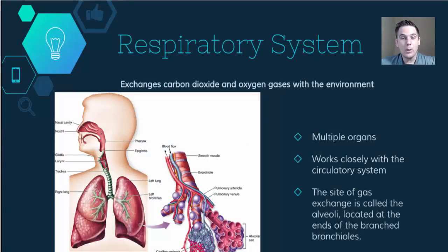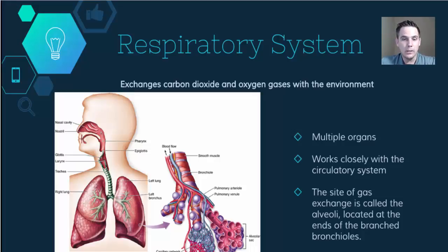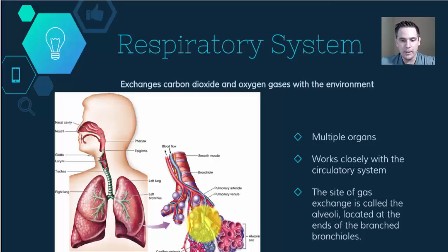For example, the respiratory system exchanges carbon dioxide and oxygen gases with the environment — carbon dioxide going out, oxygen coming in. It's an organ system because there are multiple organs involved, including your lungs, mouth, and throat. Its function is the site of gas exchange, and the most important location where these gases are exchanged is the alveoli, located at the ends of the bronchioles, as shown in this diagram.